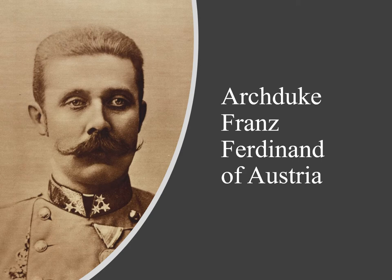He wasn't even the leader of Austria — he was the heir to the throne of the Austro-Hungarian Empire. His uncle, Franz Joseph, was the emperor and was 84 years old and not very functional. Franz Ferdinand was for all intents and purposes really the emperor, just not technically yet. So why does it matter that he got shot and killed?